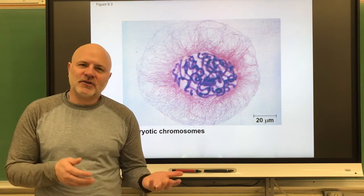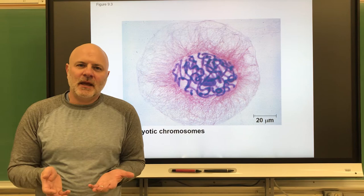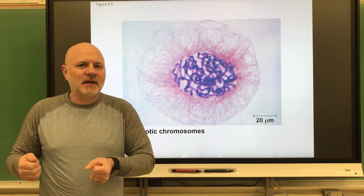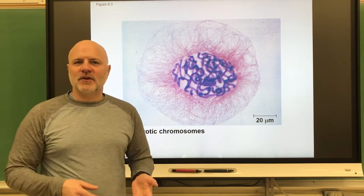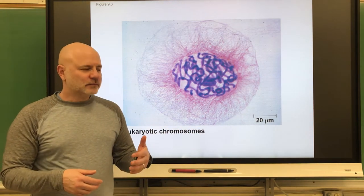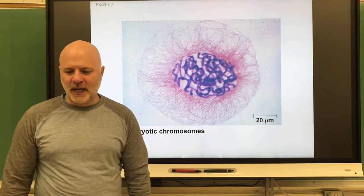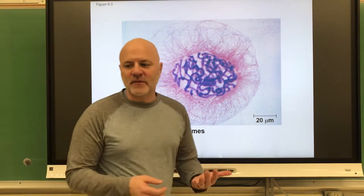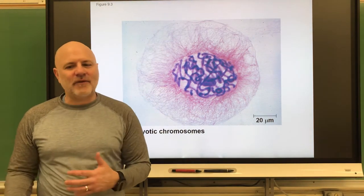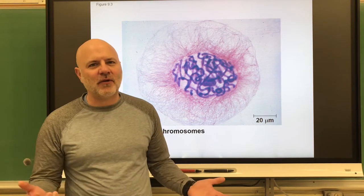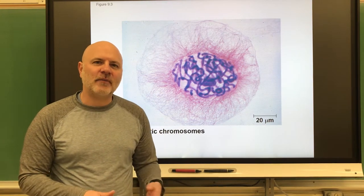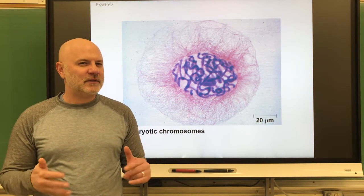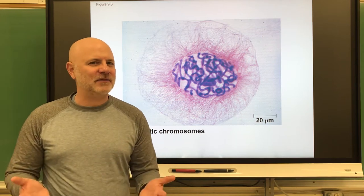Chromosomes carry the genes — they're essentially packets of DNA. Like if you're going to move, you put everything into boxes first because it's easier to move. That's what a chromosome is: packaged-up DNA. Humans have 46 chromosomes, cats have 38, and chickens have 78. What I want you to take away is that the number of chromosomes doesn't tell us much about the organism — it just tells us how many packets of DNA it has.